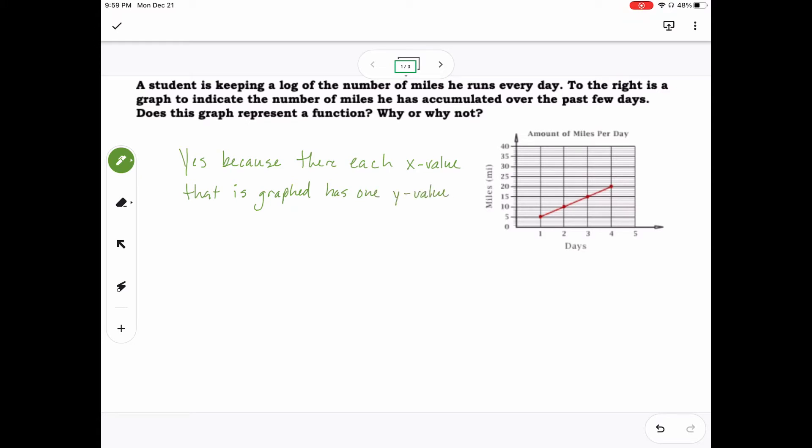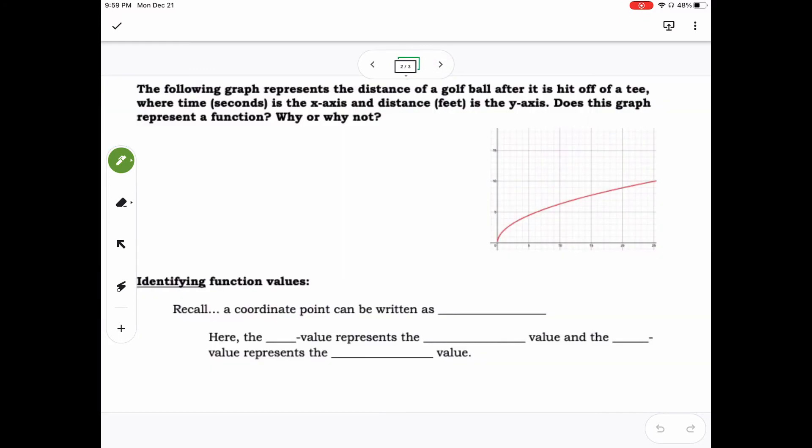For the next example, the following graph represents the distance of a golf ball after it is hit off a tee, where time in seconds is the x-axis and distance in feet is the y-axis. Does this graph represent a function? Why or why not?